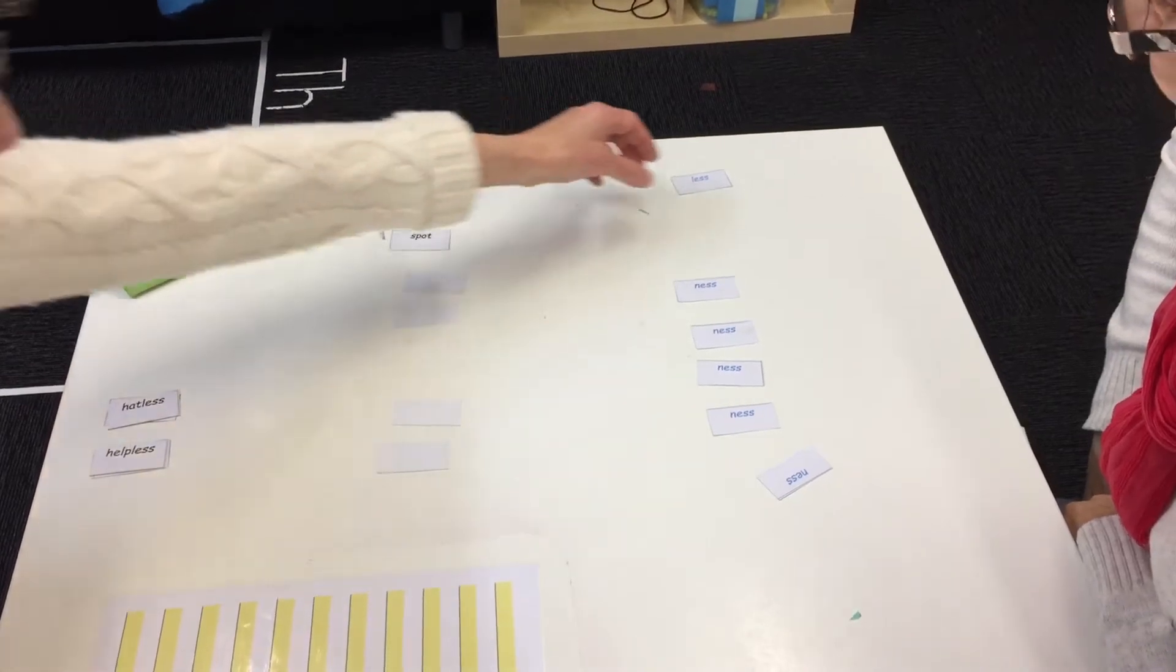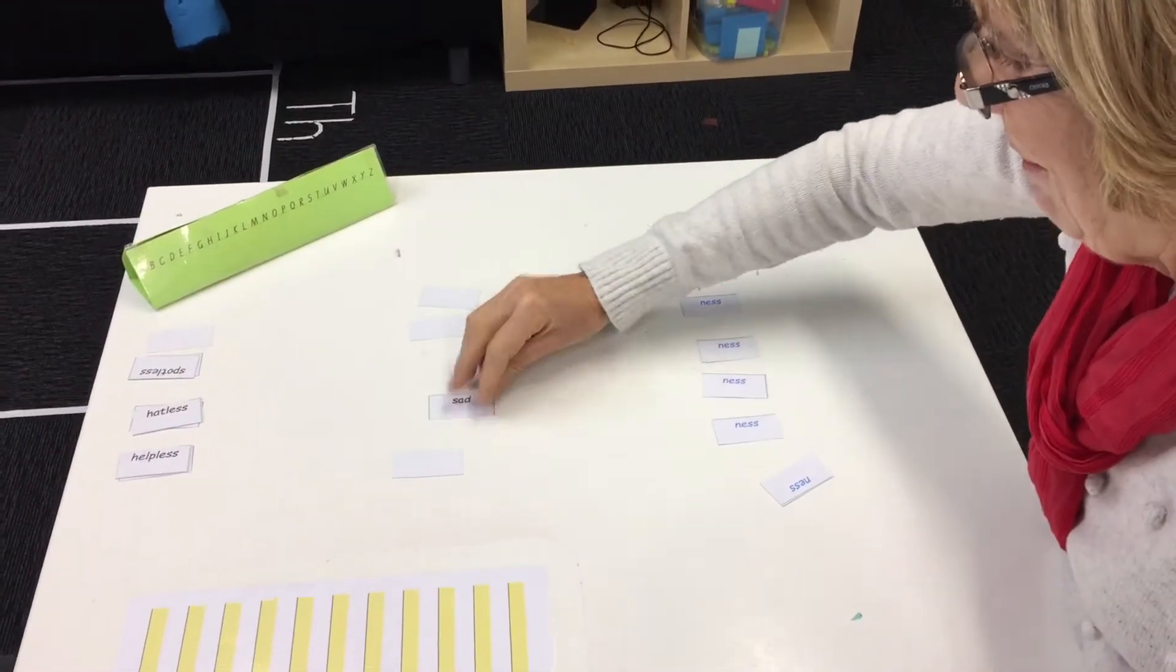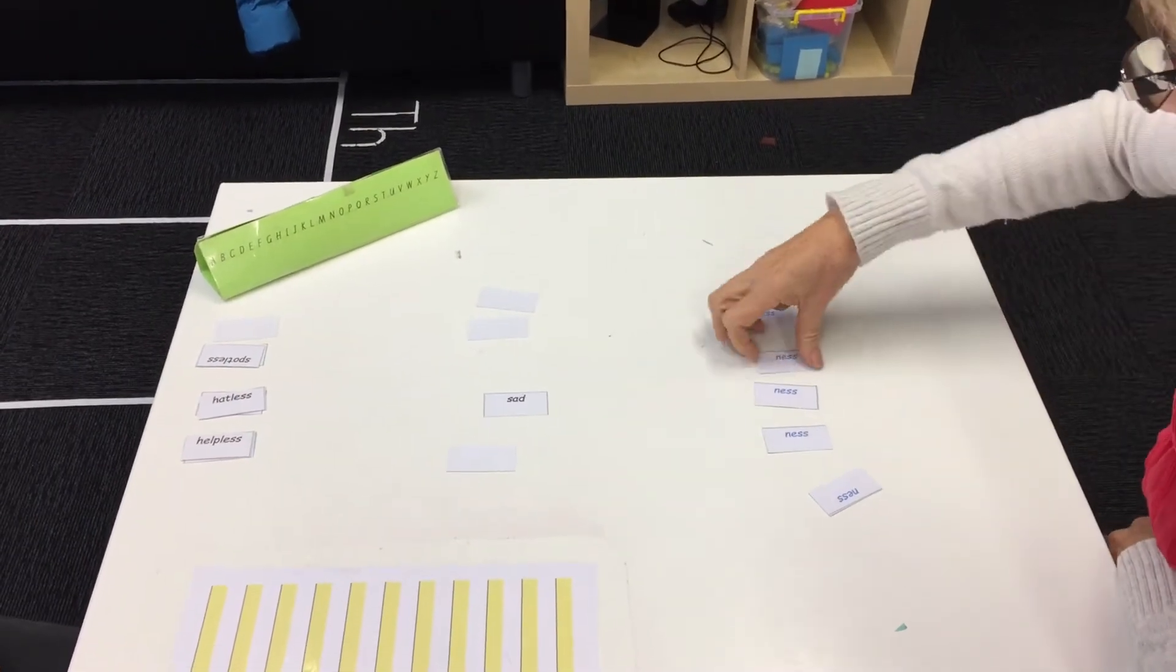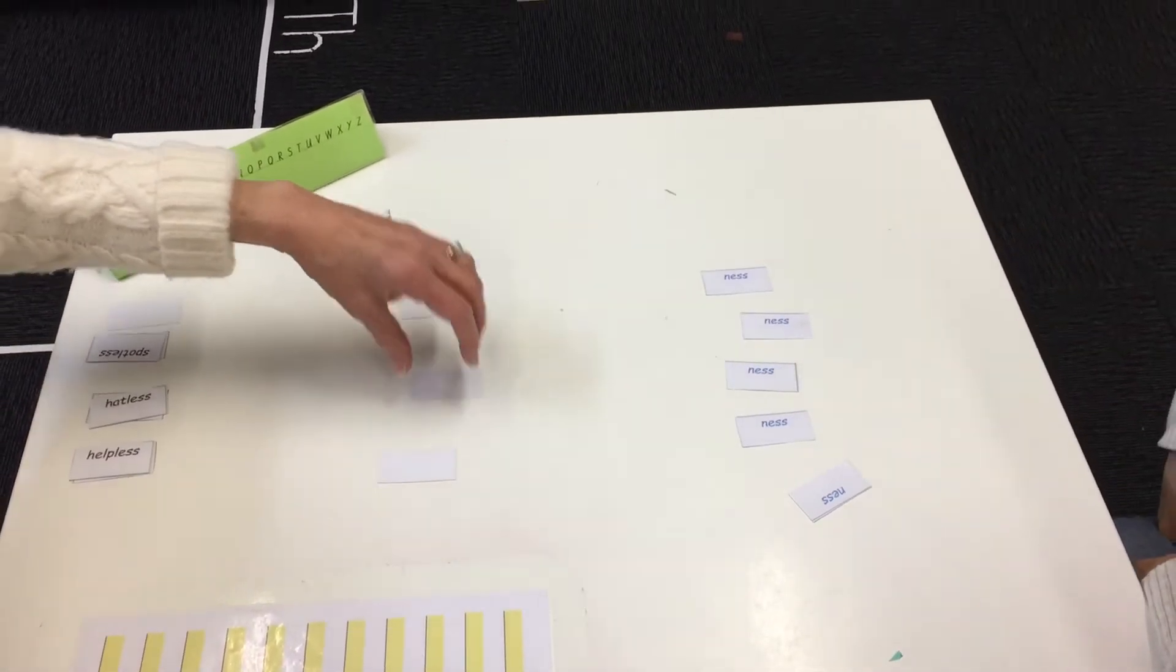Spot, spotless. Oh, that was an easy one for you. Okay. Sad, stillness. Ah, so look at all these abstract nouns coming up here. That's correct.